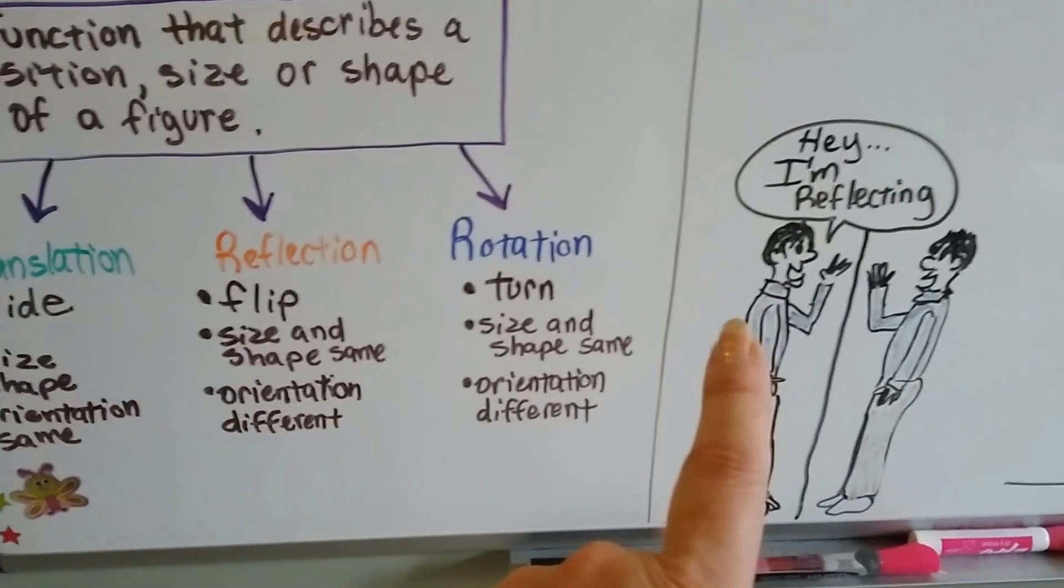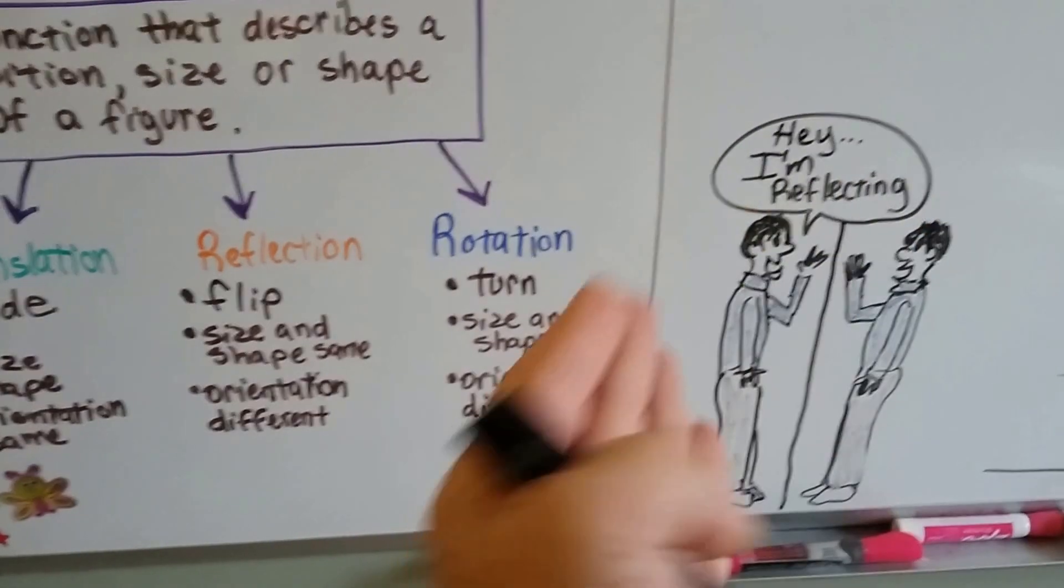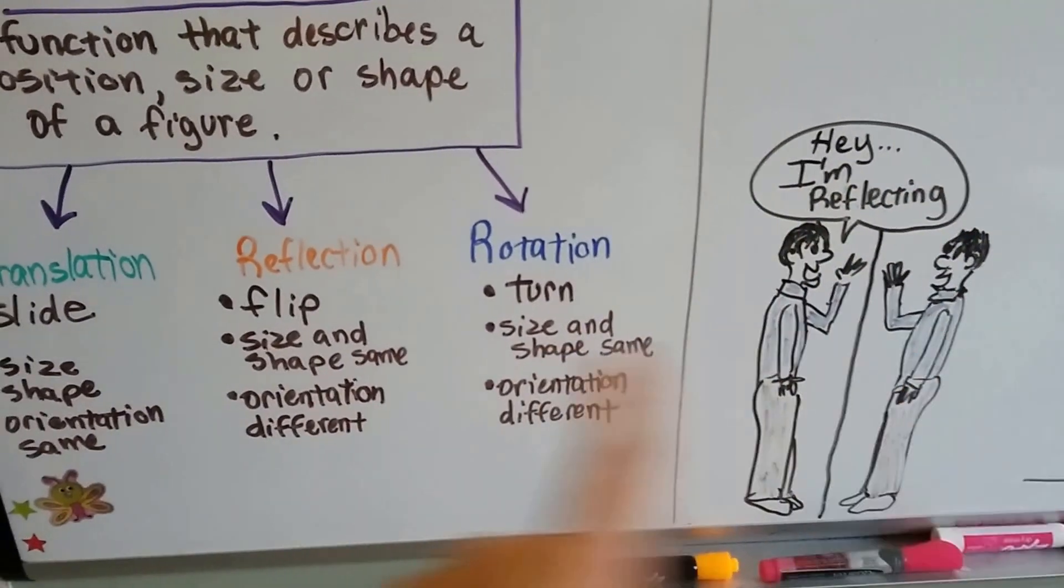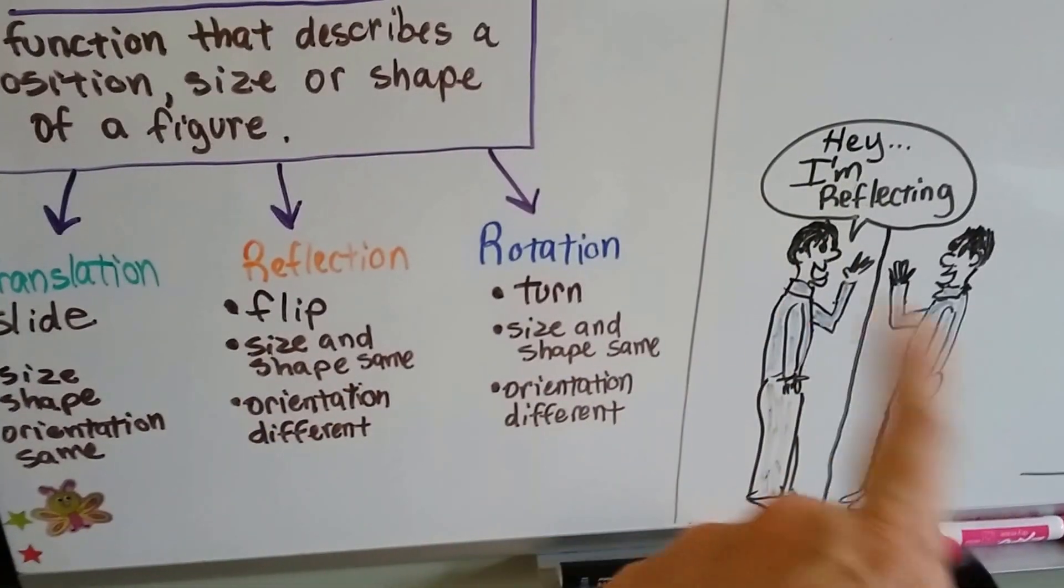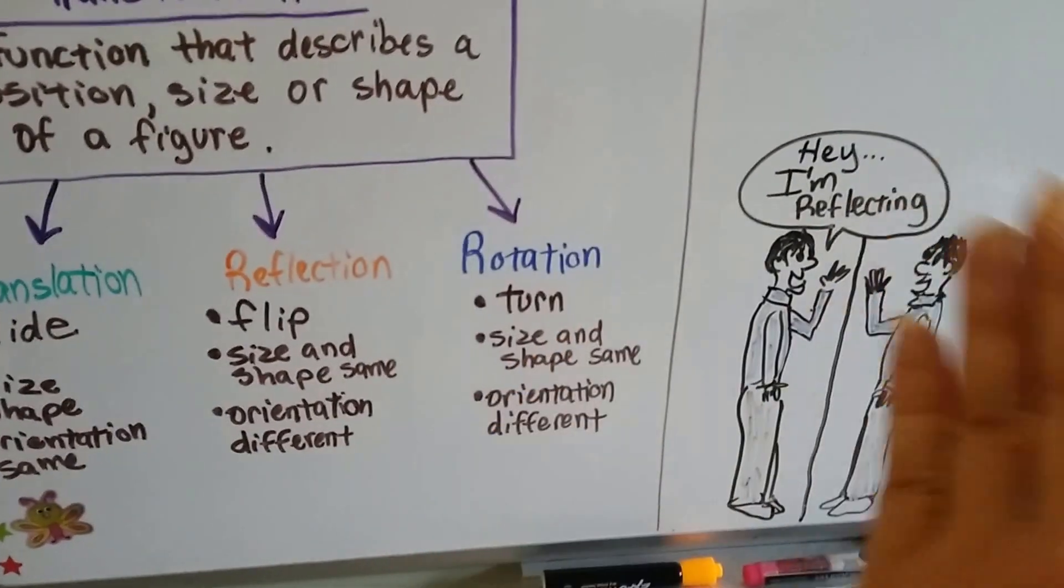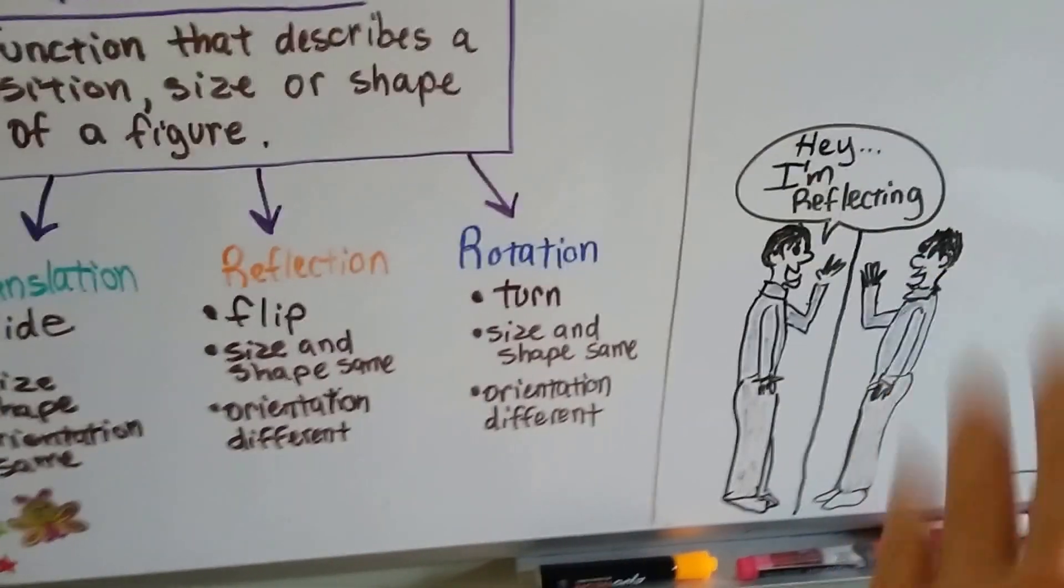In a reflection, that's like this. It's the opposite. It's like a flipped version. Rotation, the size and the shape are the same, but the orientation is different. It's now reversed.